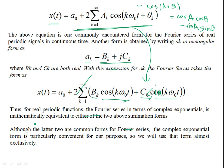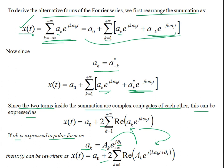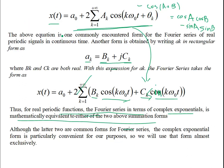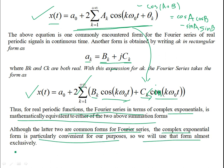For real periodic functions, the Fourier series in complex exponential form is mathematically equivalent to either of the two above summations — using polar form or using cosines and sines. Although the cosine/sine forms are common representations of Fourier series, the complex exponential form is particularly convenient for our purposes.